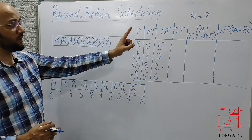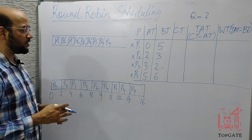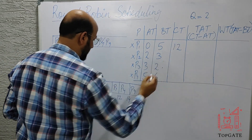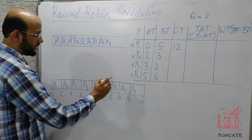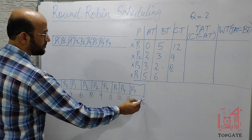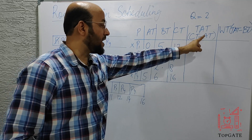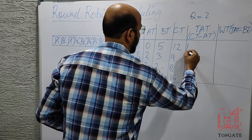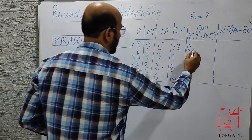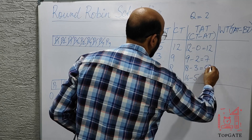Now we calculate turnaround time and wait time. Completion times: P1 = 12, P2 = 9, P3 = 8, P4 = 16. Turnaround time = completion time − arrival time. So: P1 = 12 − 0 = 12, P2 = 9 − 2 = 7, P3 = 8 − 3 = 5, P4 = 16 − 5 = 11.